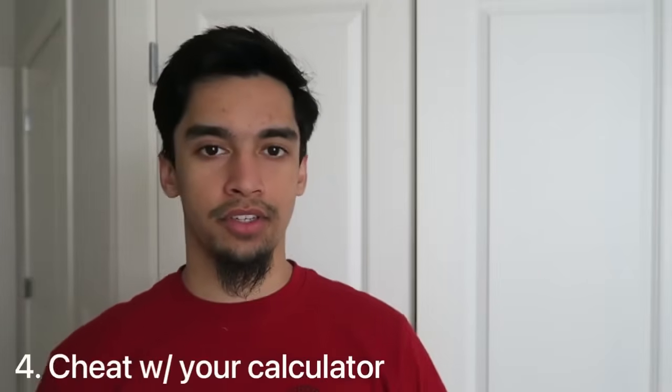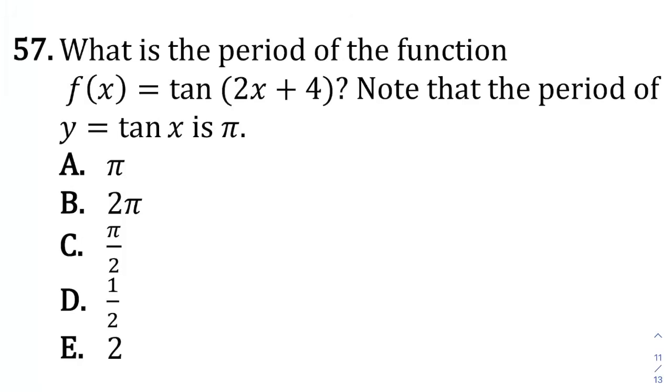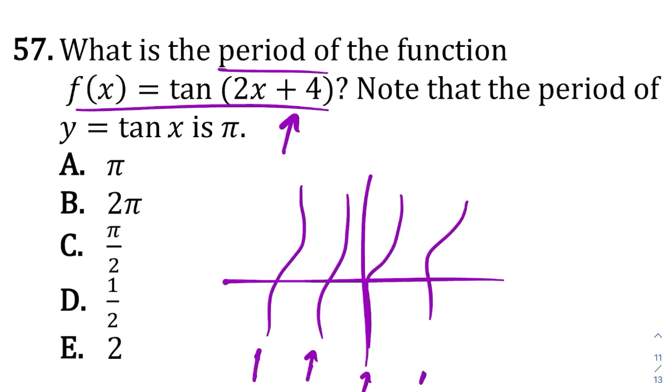Strategy number four is to cheat by using your calculator. Here's an example. This is a perfect example of a problem where you want to use the calculator to really do the work for you and do the analysis. So it's asking, what's the period of this function? Now, no one on earth knows what the period of tan of 2x plus 4 looks like. But if you just graph the equation in the xy coordinate plane, the graph basically repeats itself every some distance. And if you find out that distance, you know what your answer is. So no analysis required.